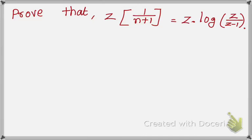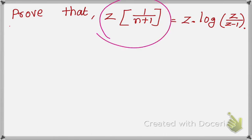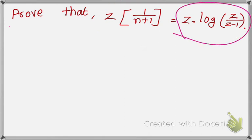Dear students, in this video, we are going to solve a problem from Z-transform. The problem is: prove that Z of 1 over (n plus 1) equals C times log of C over (Z minus 1). This is your Z-transform.